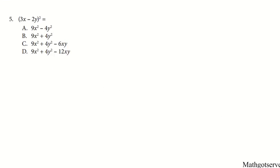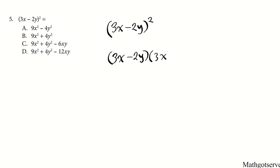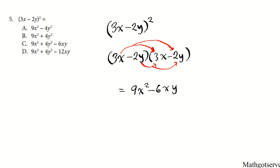Let's move on to question 5. This is an assessment of our knowledge of the distributive property. We have (3x minus 2y) squared, which means we multiply this quantity by itself twice: (3x minus 2y) times (3x minus 2y). We can FOIL this out — first, outer, inner, and last. First: 3x times 3x is 9x squared. Outer: negative 6xy. Inner: negative 6xy also. Last: minus times minus is plus, so 2y times 2y is 4y squared.